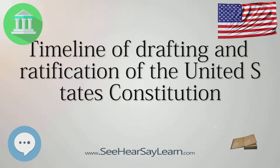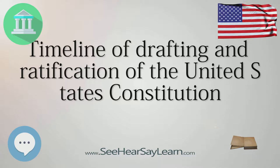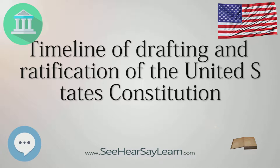1786. January 21: Conference to Address Certain Defects of the Federal Government Called. The Virginia General Assembly calls for an interstate convention for the purpose of discussing and developing a consensus about reversing the protectionist trade and commerce barriers existing between the various states.